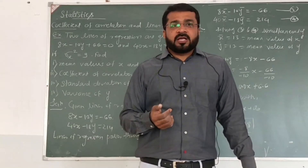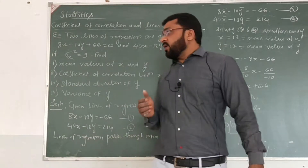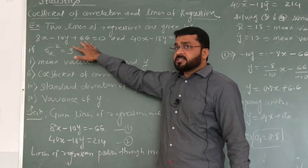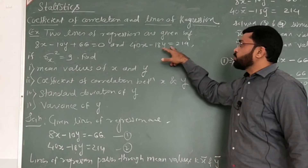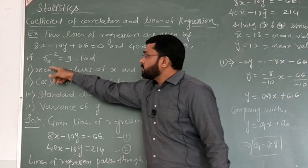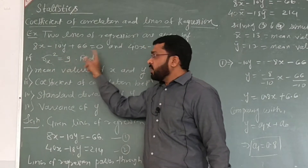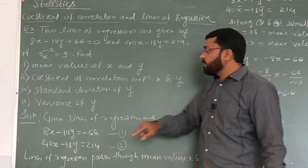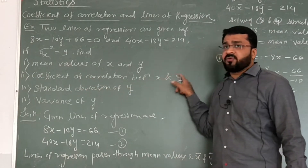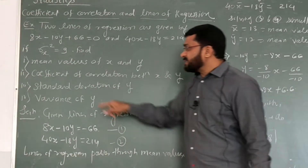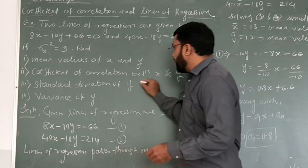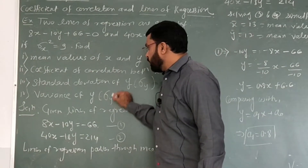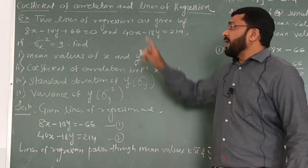Today's topic is lines of regression and coefficient of correlation. Two lines of regression are given: 8x minus 10y plus 66 equals 0, and 40x minus 18y equals 214, with sigma x squared equals 9. We have to find: the mean values x-bar and y-bar, the coefficient of correlation r, the standard deviation of y (sigma y), and the variance of y (sigma y squared).